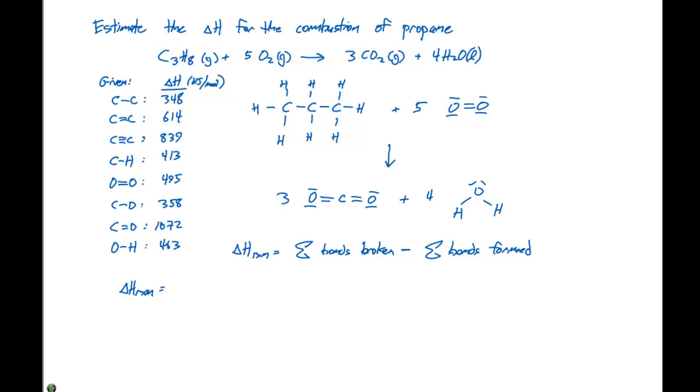So our delta H of the reaction is the sum of the bonds broken. Looking at our reactants, there are 8 carbon-hydrogen bonds that are broken, plus 2 carbon-carbon bonds, plus 5 oxygen-oxygen double bonds.